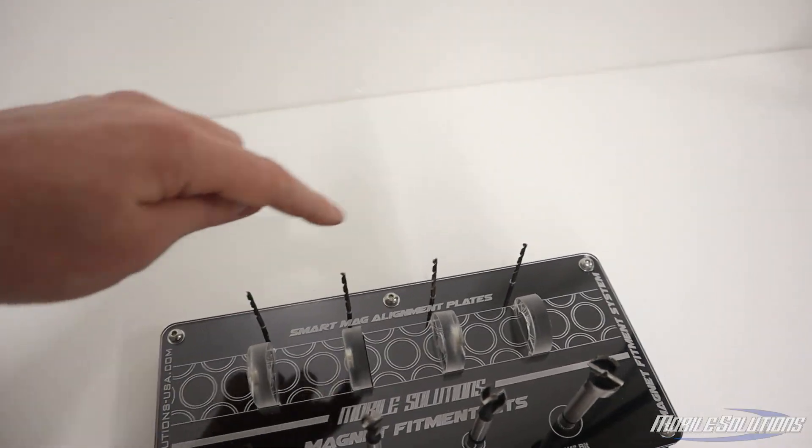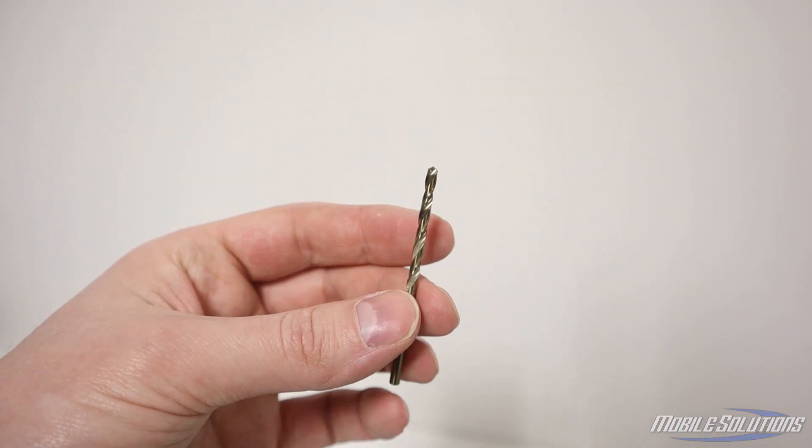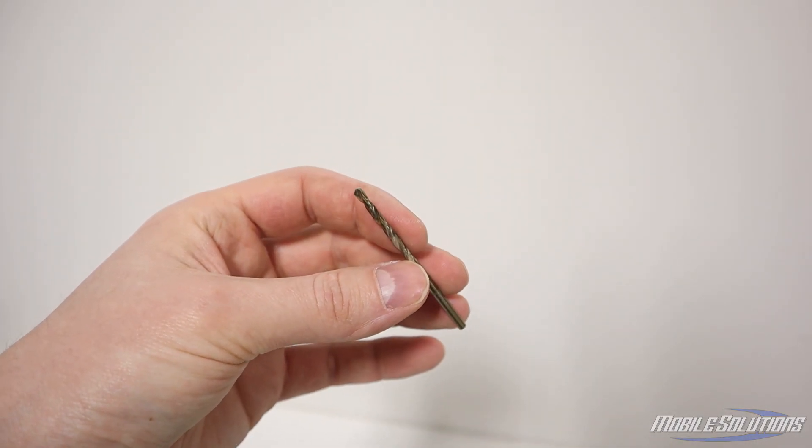Included on the tray are four drill bits. These are all the same size and these will be used to transfer the center hole location for each magnet.